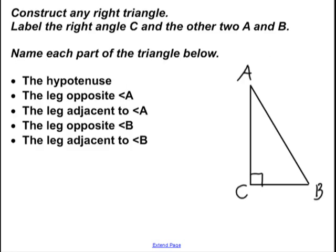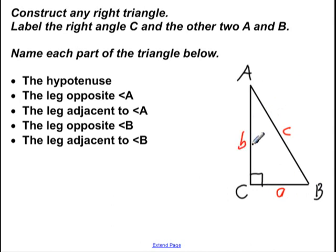So to start, let's just sort of look at a generic right triangle. Go ahead and pause and draw one that looks kind of like mine. We've used this language here. You know what a hypotenuse is. I'm going to call the hypotenuse little c, and I'm going to call this leg a — you could call it bc, but I'm going to call it just a. And I'm going to call this one little b. I want to make sure you're really clear about all of this vocab.